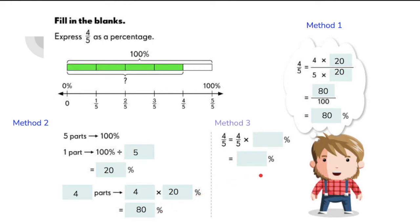Let's check out the last method, which is the fastest way of solving the problem. 4 fifths times 100%. This is equal to 80%.